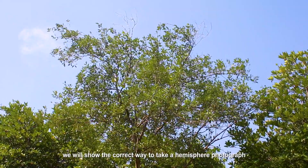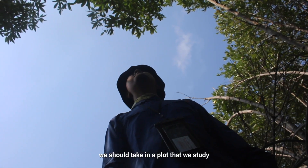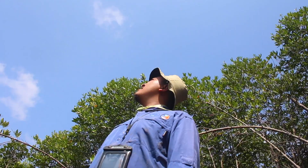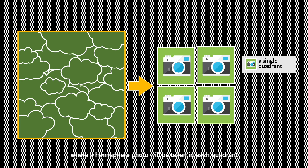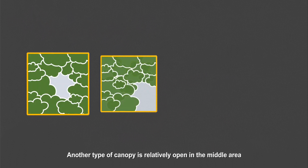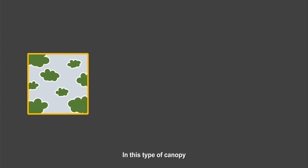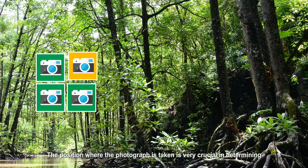The first step is to determine how many photographs to take in a plot. Each plot has its own canopy characteristics. In a uniformly dense canopy, the plot is divided into four quadrants where a hemisphere photo is taken in each quadrant. For a canopy that is relatively open in the middle, five quadrants are used. For a sparse or non-uniform canopy cover, nine quadrants are used on each plot.